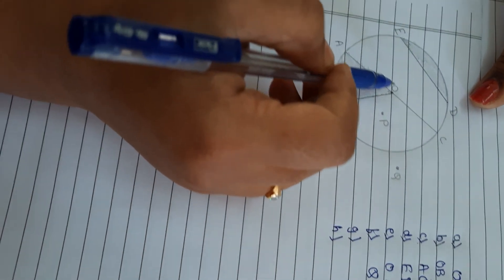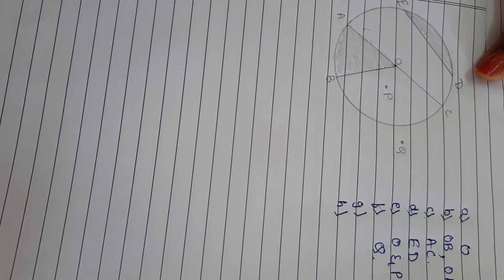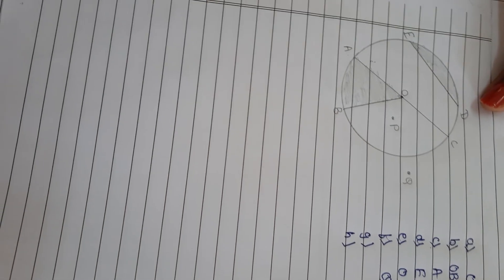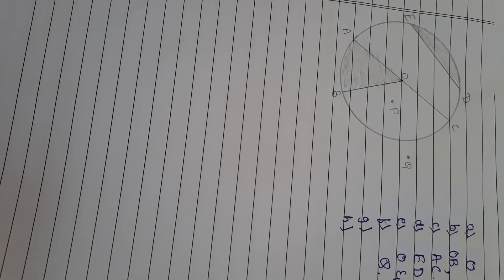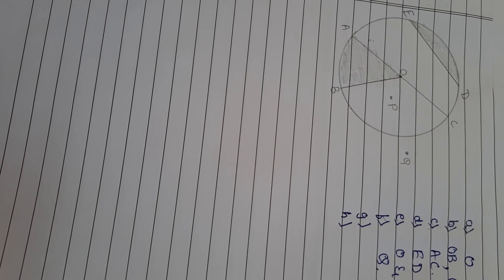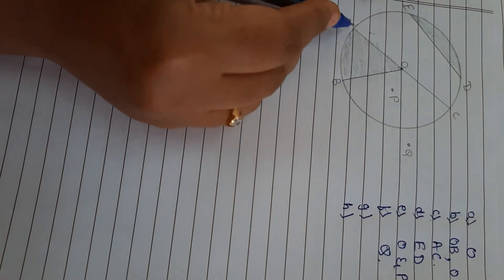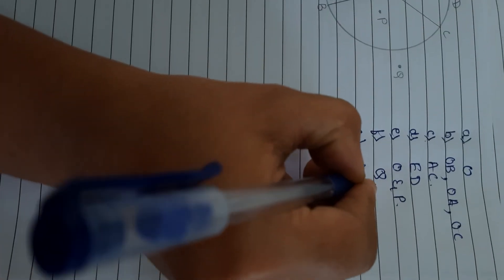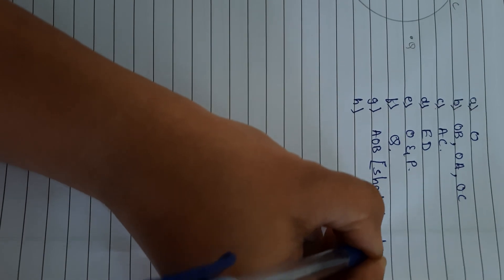The next question asks for a sector. Sector means the region enclosed by an arc and a pair of radii of a circle. This is the sector. What is the name of this sector? AOB — and in brackets you have to write shaded part.